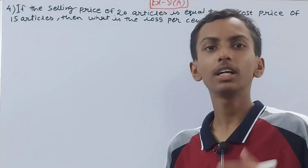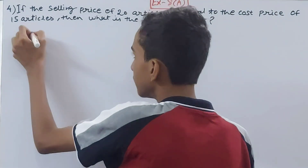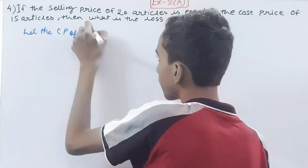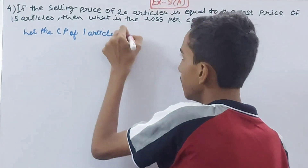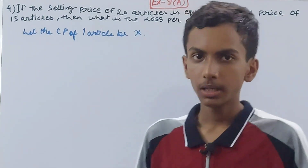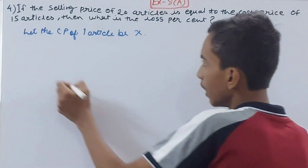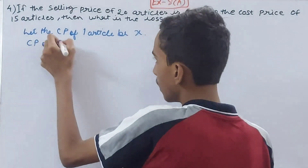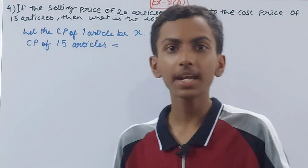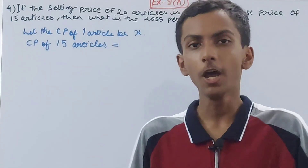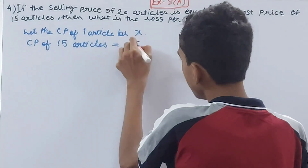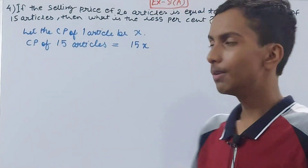We will begin this question. In this case we will assume the cost price — let the cost price of one article be x. So the cost price of one article we have assumed as x. Now let's find out CP of 15 articles. If cost price of one article is x, then cost price of 15 articles will be 15 into x, which we can write simply as 15x.